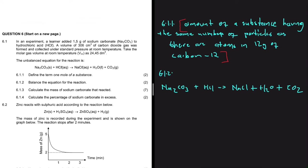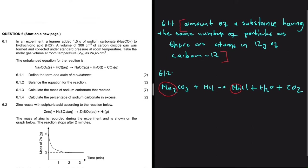The equation is already given to us but it's unbalanced, which makes our job a little easier. On the left-hand side we have two atoms of Na, but on the right-hand side we only have one — they're not balanced. If we put a coefficient of two on NaCl, we'll have two atoms of Na on both sides.